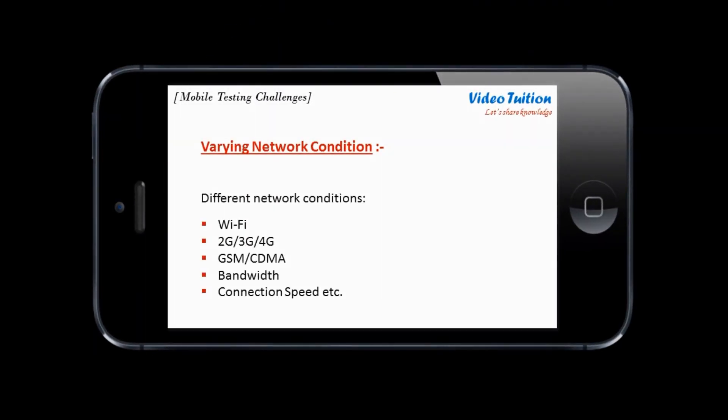Mobile application behavior can be affected by changes in network conditions such as Wi-Fi, 2G, 3G, 4G, GSM, CDMA, bandwidth, connection speed, etc. This requires additional testing to ensure acceptable application behavior in real-world conditions.